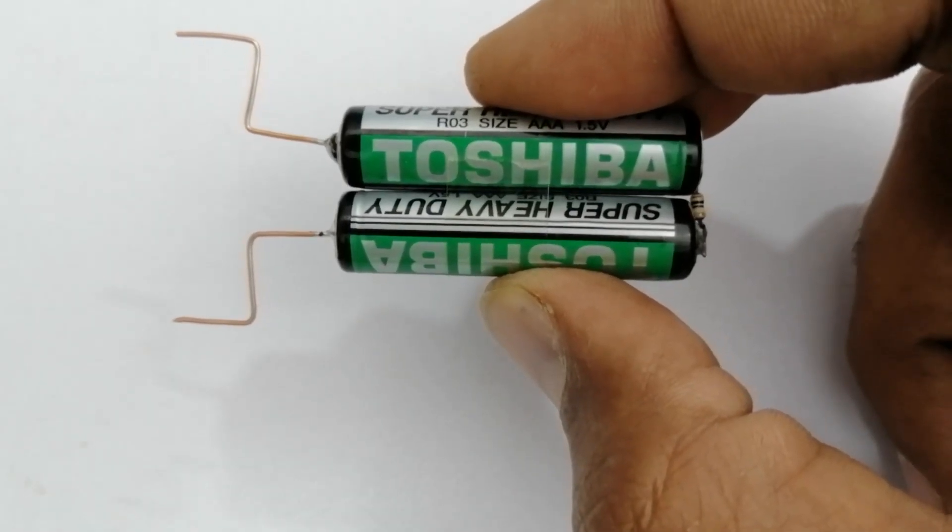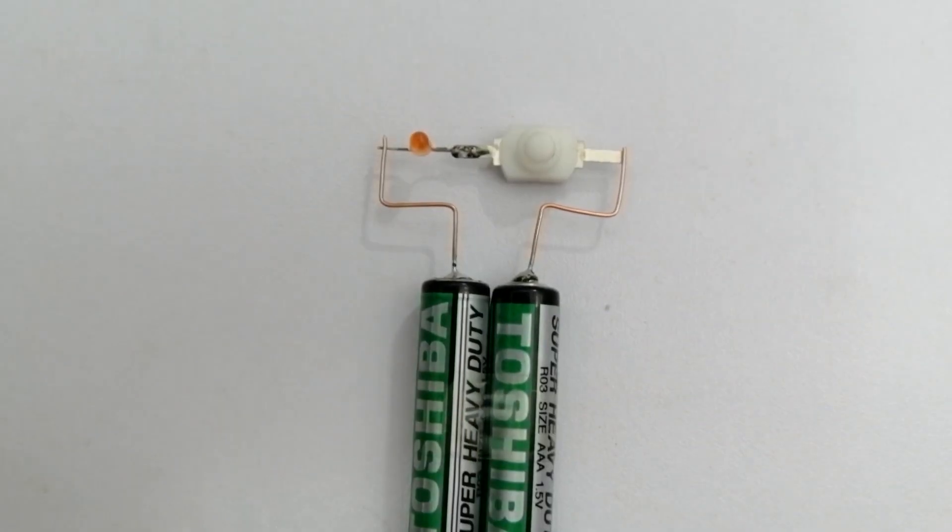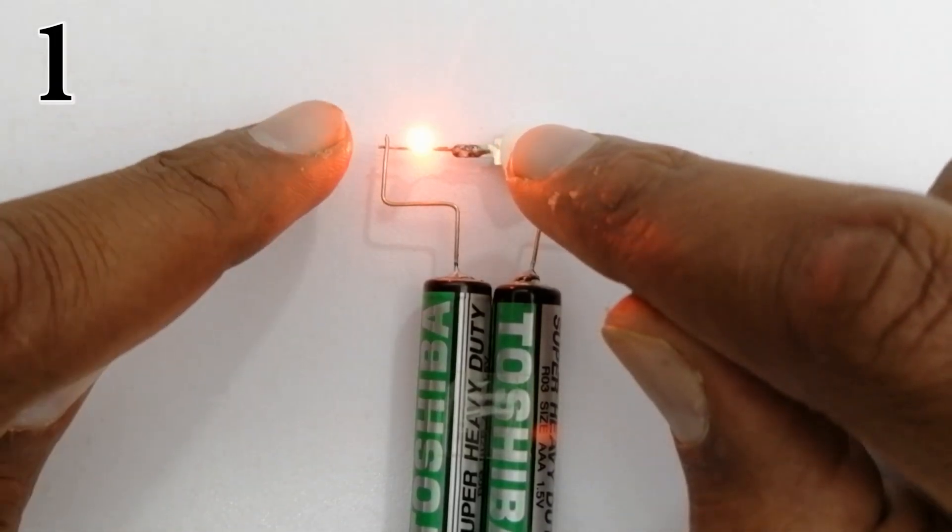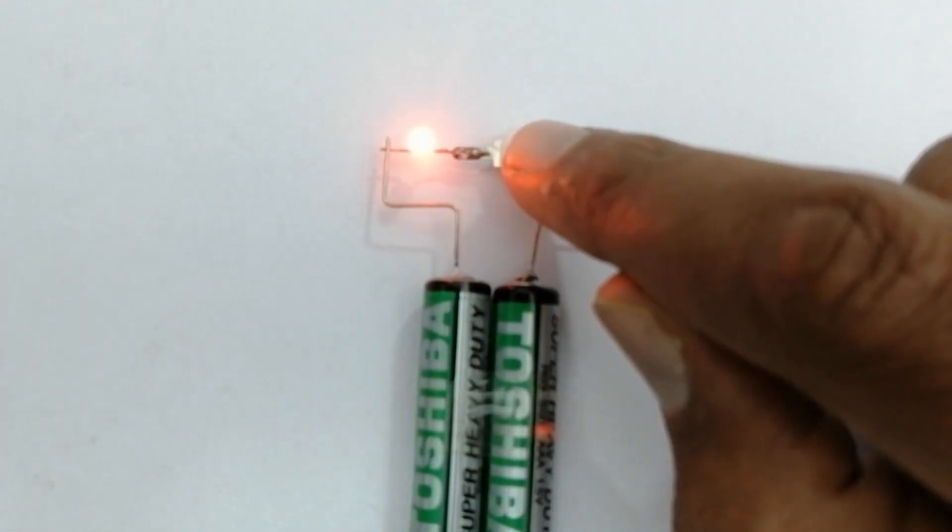This is a battery cell. Let's attach this battery to this memory cell. When we need to save 1, turn on this switch and the light turns on. When we need to save 0, turn off this switch.